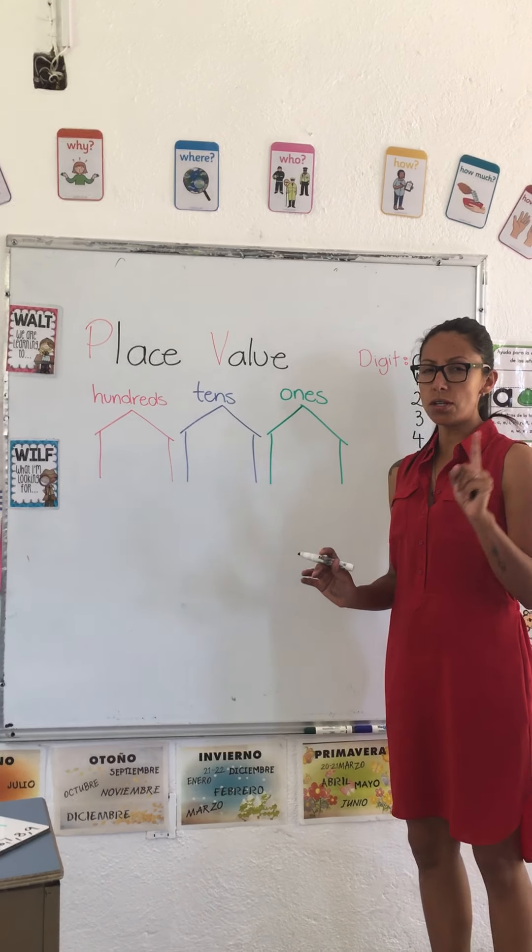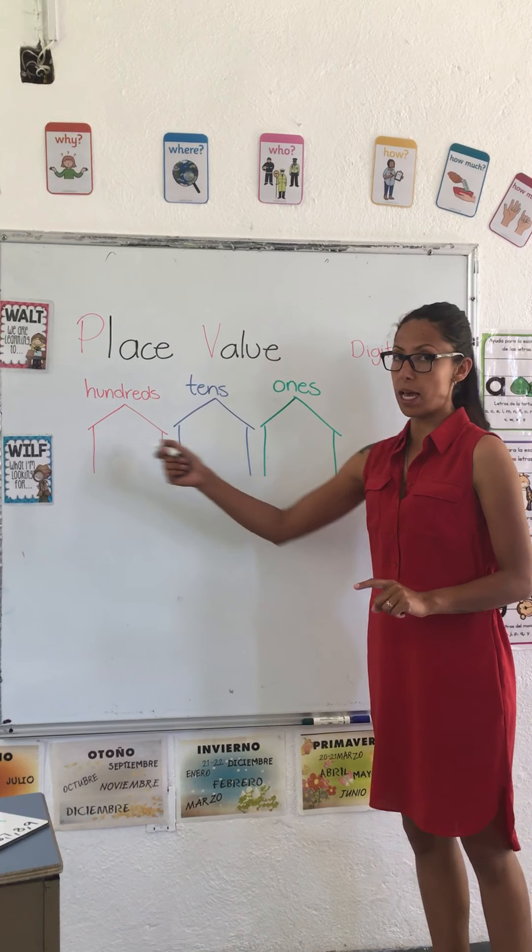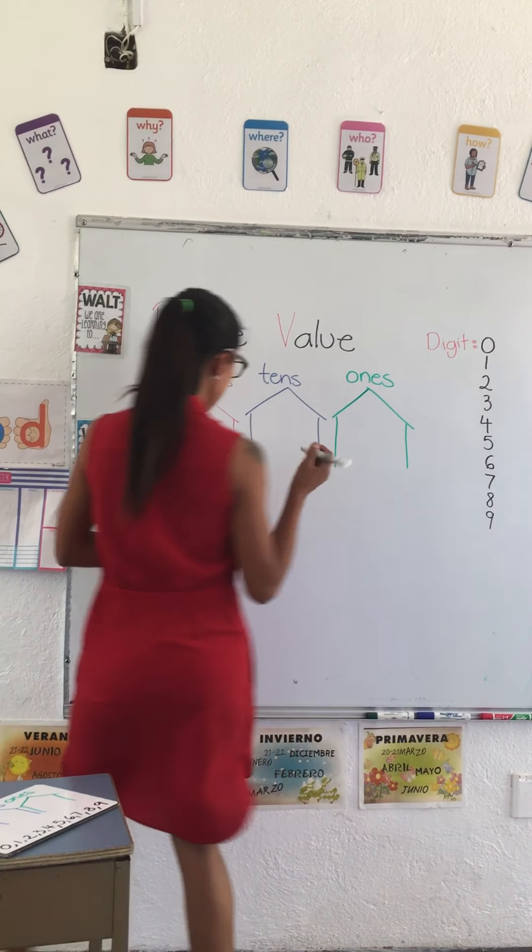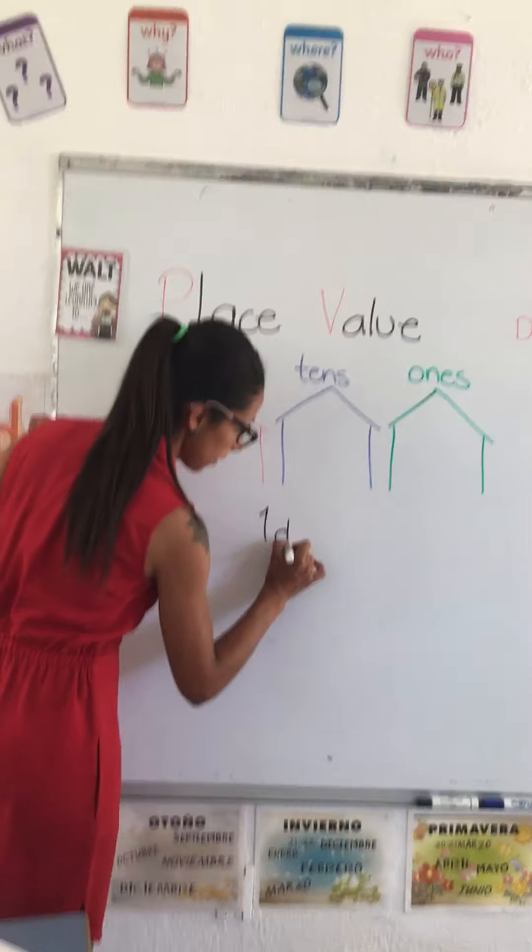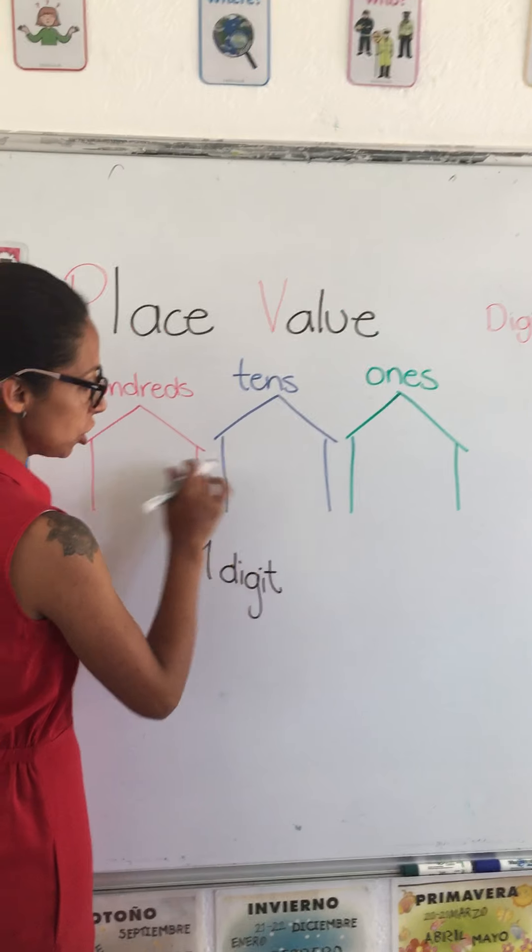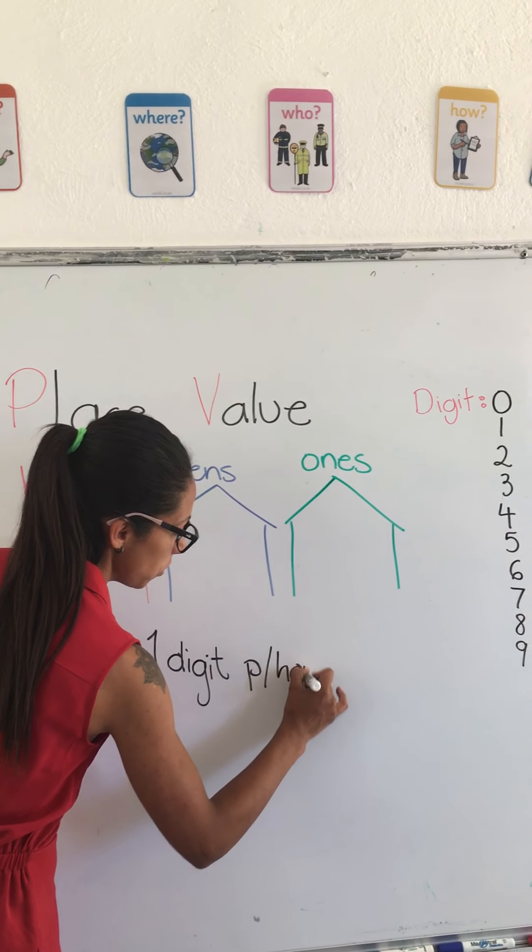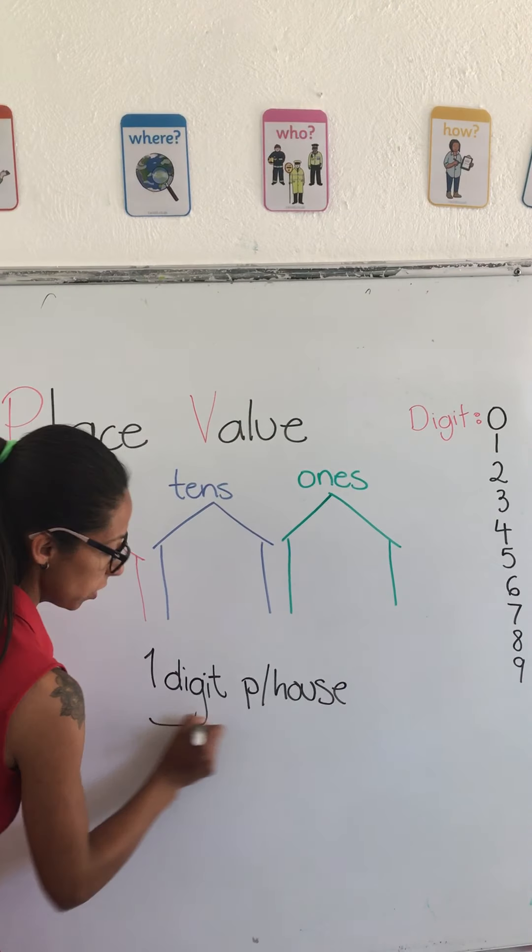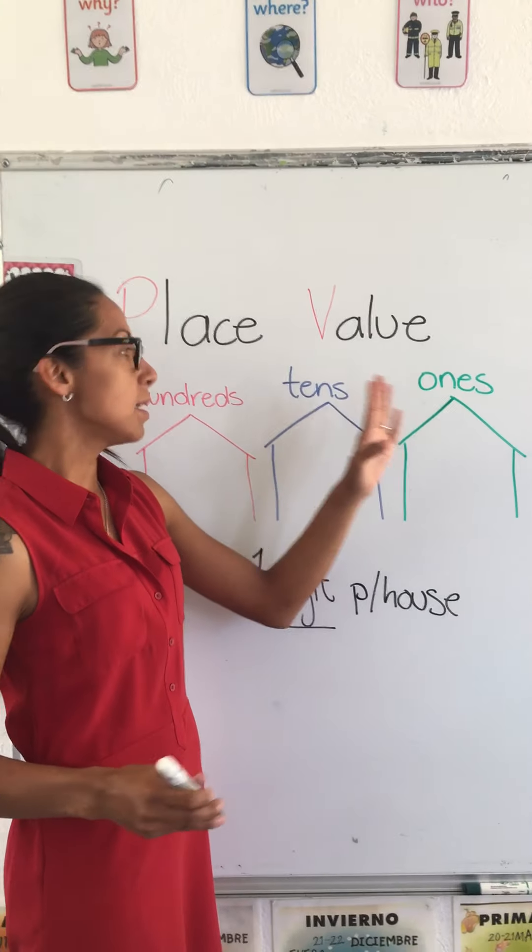To learn place value, there is one rule. We're gonna have three houses and we need to remember that we just need one digit in each house.